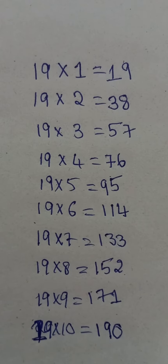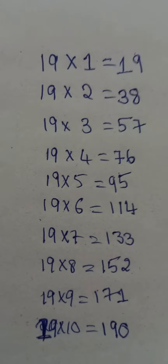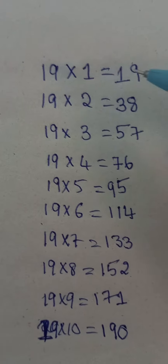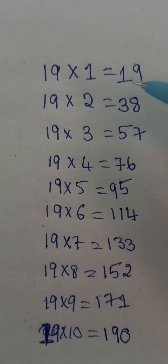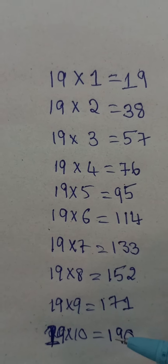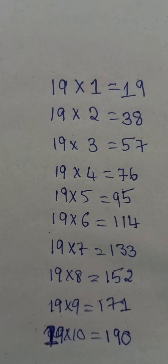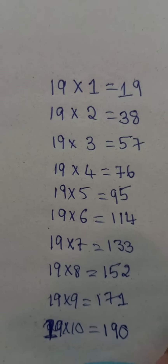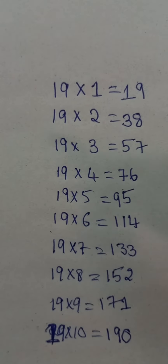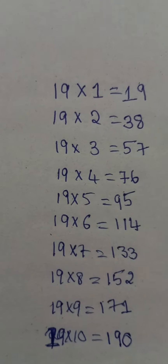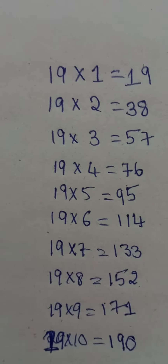The 19 table is completed. I am repeating again: first write odd numbers 1 to 19, and write 0 to 9 from down to up. Thank you.